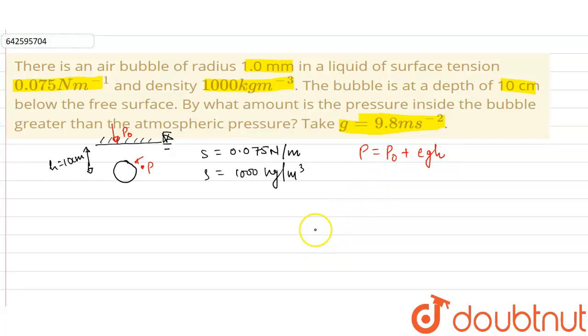The trick, one of the most important tricks here, is the difference between a bubble and a drop. What happens in the case of a drop? Let us suppose this is a drop and this is a bubble.